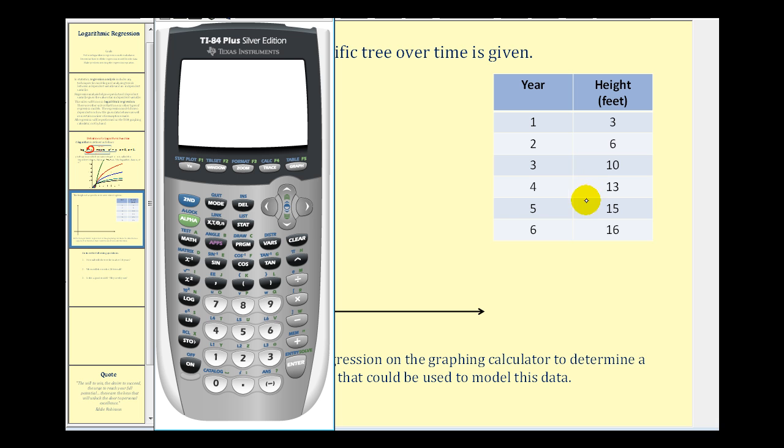We'll first enter in the data by pressing stat, enter. Then we're going to clear out the old data by going to the top of the column, press clear, enter to clear the entire column at one time. Now we'll enter in the new data. Notice L1 will be from 1 to 6, and we'll enter in the heights in L2.